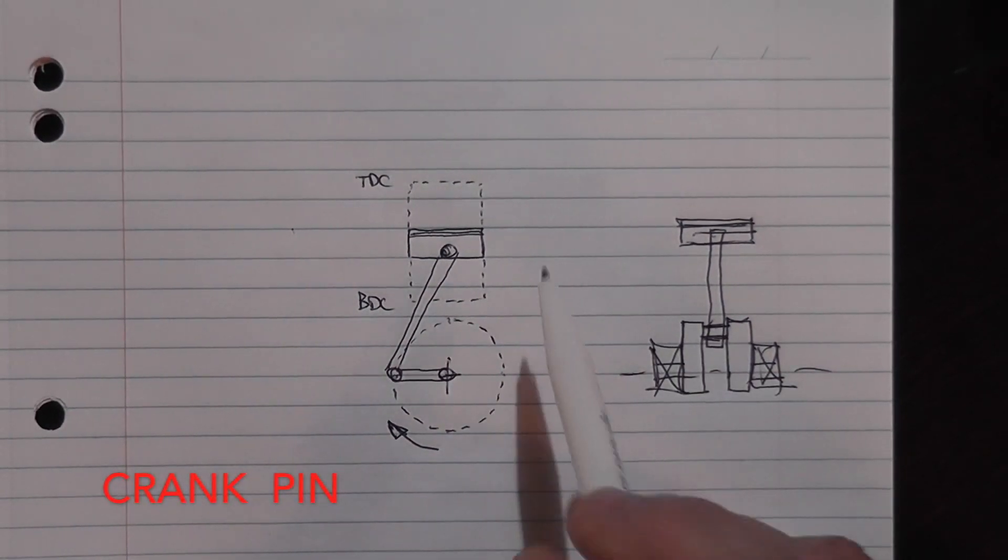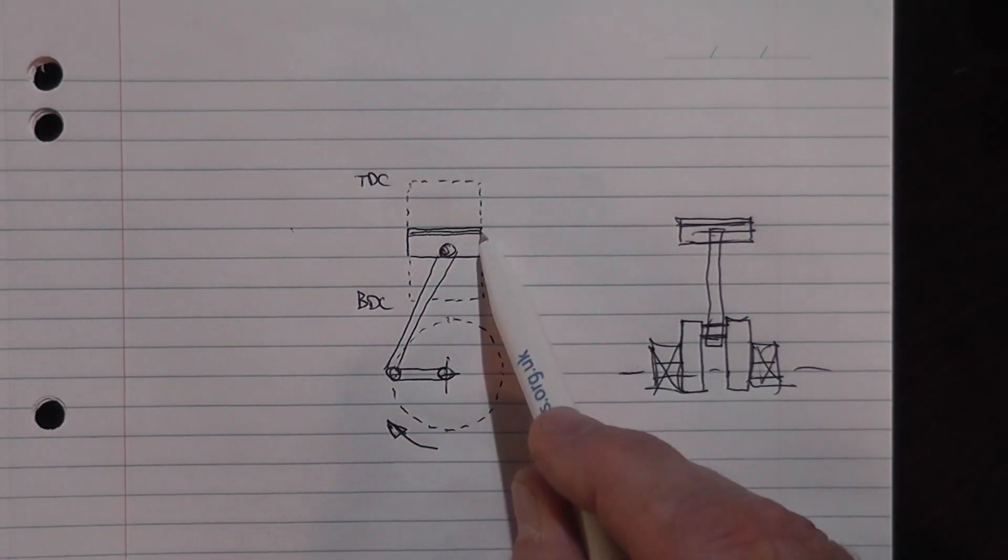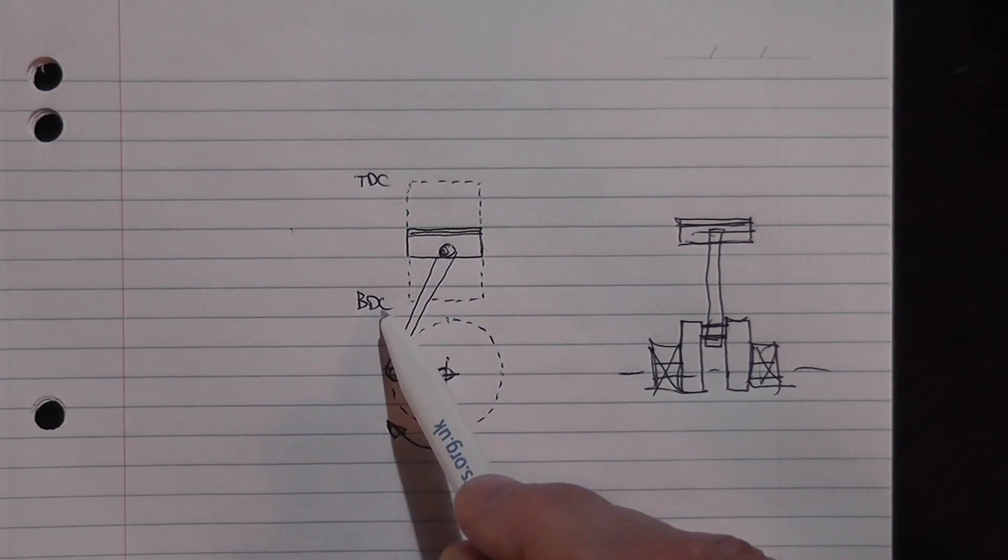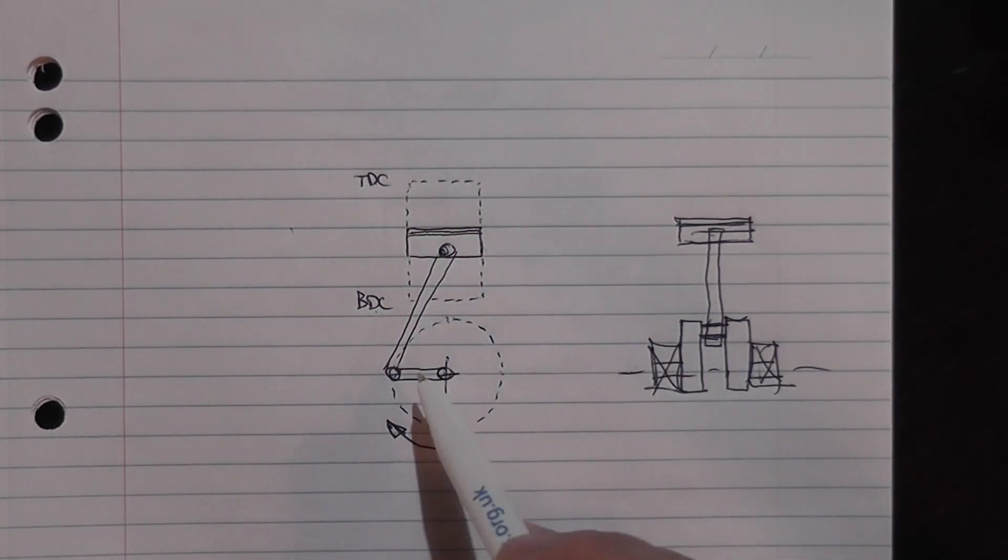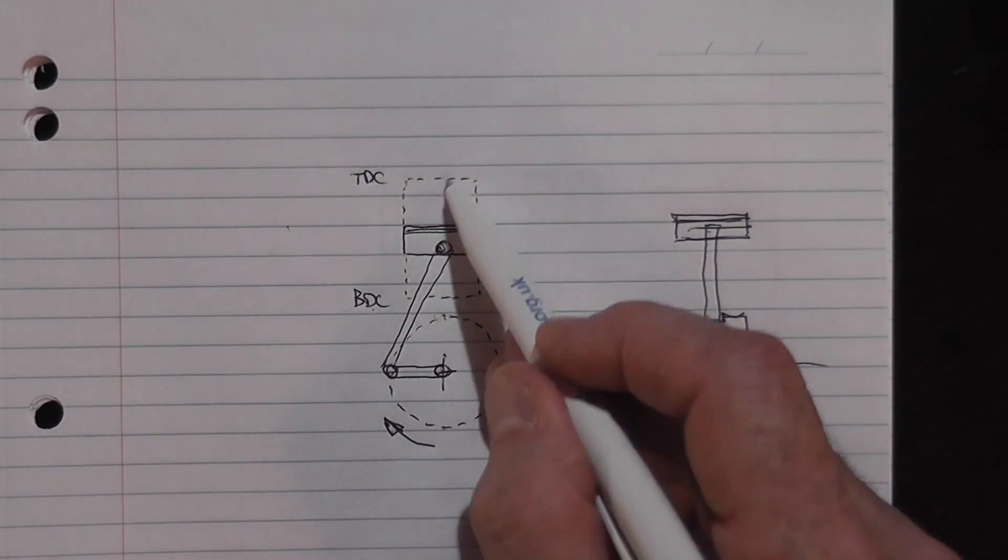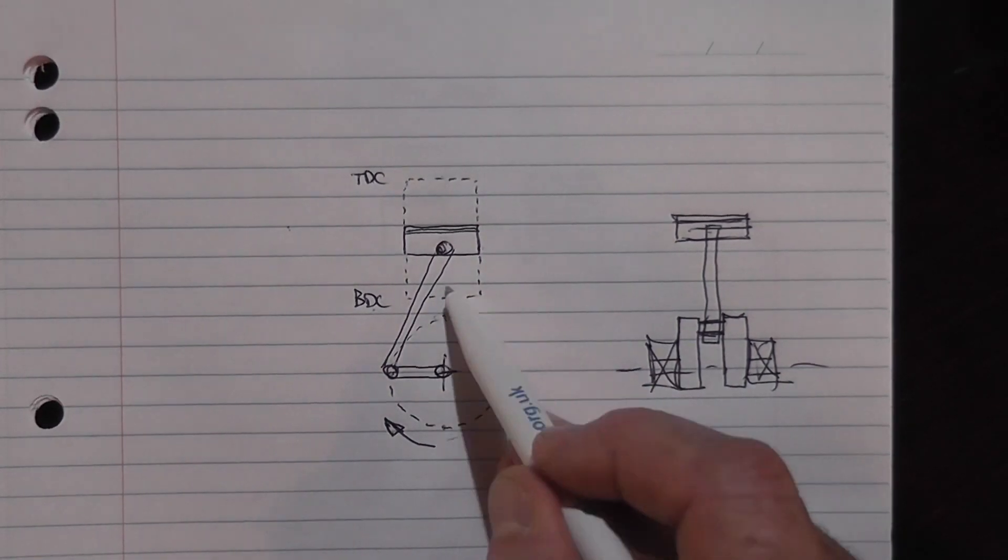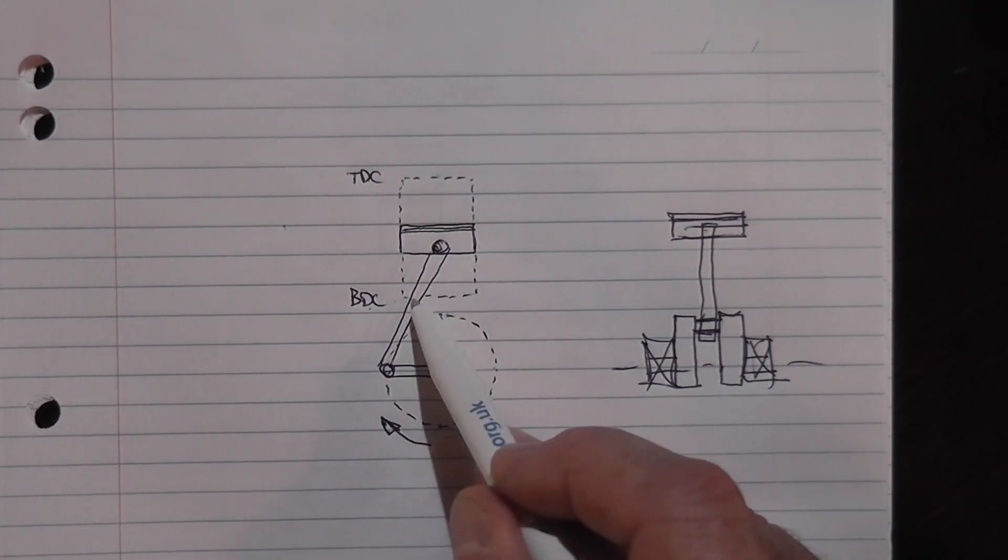So what you've got as it's shown there, the piston is in mid-stroke, it's between bottom dead center and top dead center. As this moves around into up to this position, the piston will move up to top dead center and as it comes around to the bottom, the piston will move to the bottom dead center.